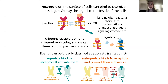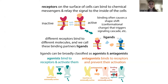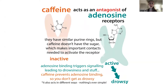An agonist is a ligand that activates the receptor and causes signaling. An antagonist competes with the agonist for that binding site and prevents activation. If the receptor had no activity on its own, blocking the agonist would give you no activity at all — this was the traditional idea.